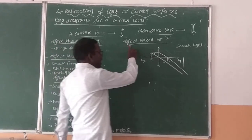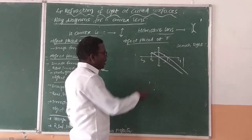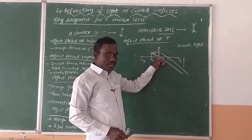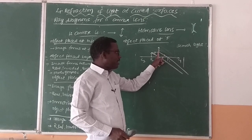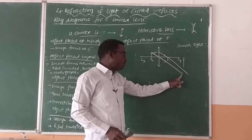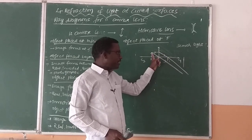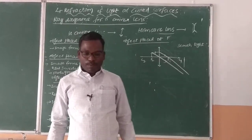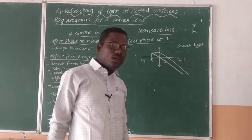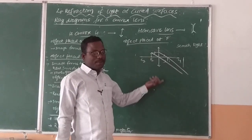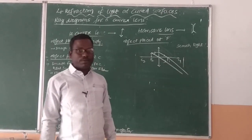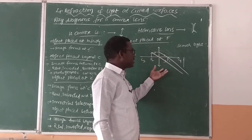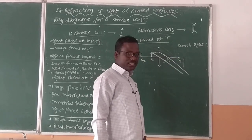Now we are going to discuss when an object is placed at the focus. We draw an incident ray parallel to the principal axis; after refraction it passes through the focus. We draw another incident ray passing through the optical center. These two refracted rays do not converge, so the image is formed at infinity. The nature and size of the image cannot be discussed. This type of image is formed in a searchlight.